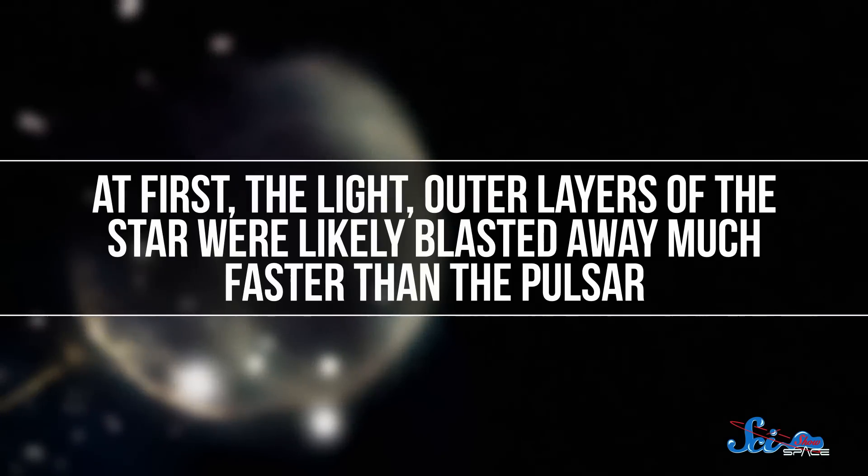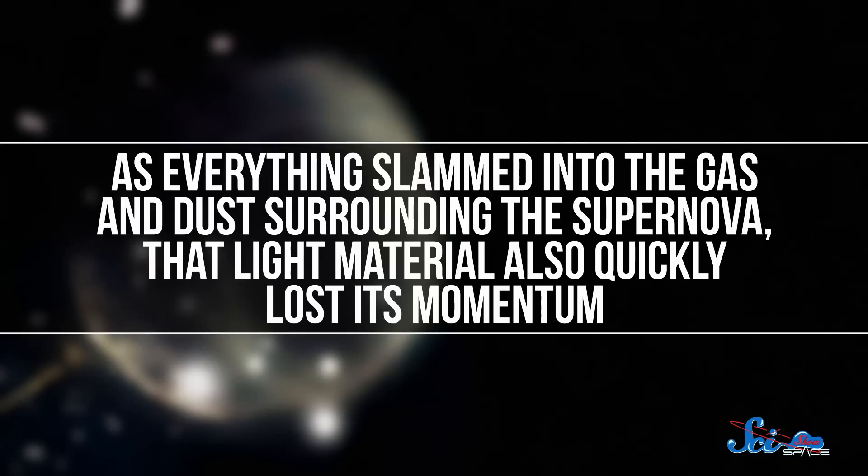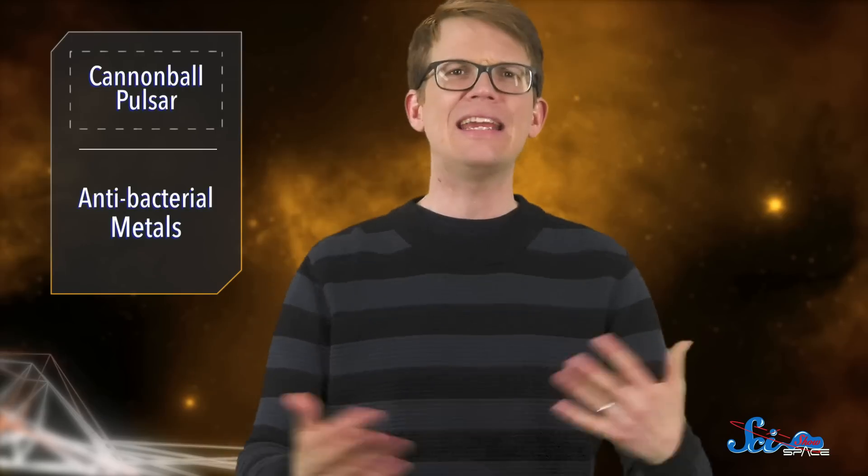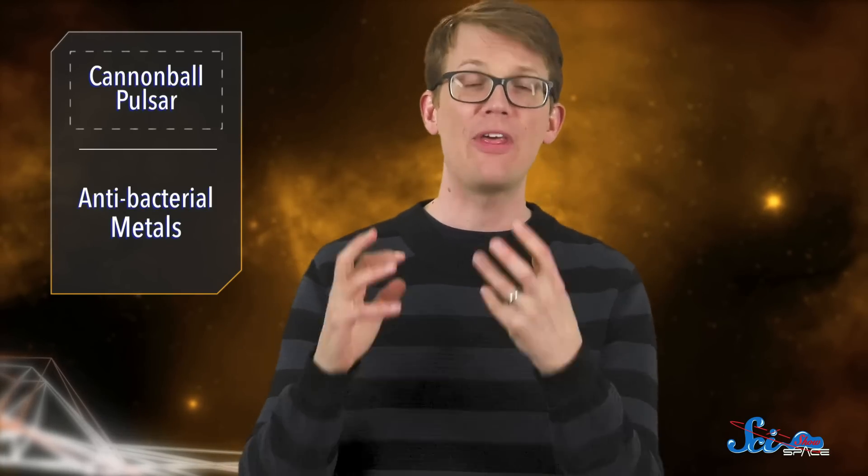At first, the light outer layers of the star were likely blasted away much faster than the pulsar, but as everything slammed into the gas and dust surrounding the supernova, that light material also quickly lost its momentum. Think about, like, a cannon firing. The first stuff to come out is the fire and the smoke, but the heavy cannonball eventually goes the farthest.